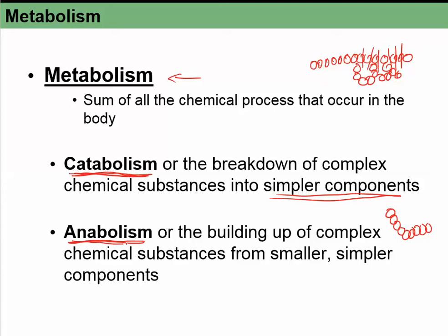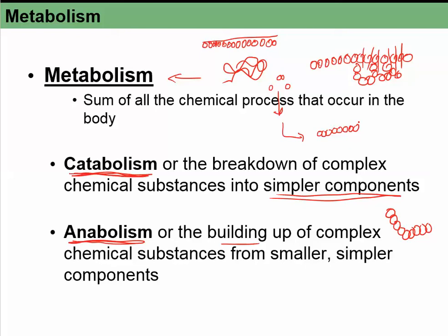Building things up is anabolism. For example, proteins enter the bloodstream as individual amino acids or small chains, and then we build them back up into proteins. That's where anabolic steroids come in — they stimulate the body to build up proteins more quickly, causing muscles to get larger. So anabolism is building up, catabolism is breaking down.